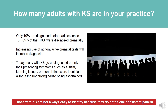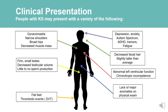Those with KS are not always easy to identify because they do not fit one consistent pattern. People with KS may present with a variety of the following: small firm testes, decreased testicular volume, little to no sperm production, gynecomastia, narrow shoulders, broad hips, decreased muscle mass, decreased facial hair, perhaps slightly taller than average, flat feet, thrombotic events such as DVT, abnormal left ventricular function or chronotropic incompetence, lack of major anomalies on physical exam, and depression, anxiety, autism spectrum, ADHD, tremors, and fatigue.